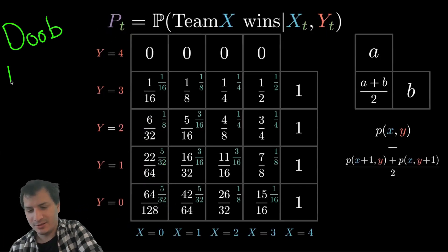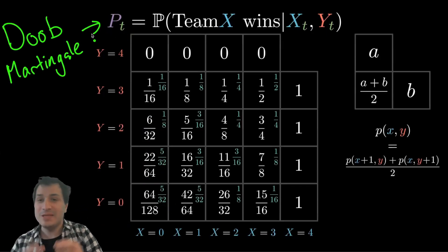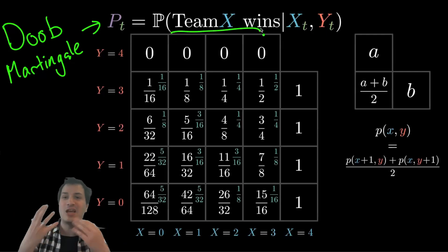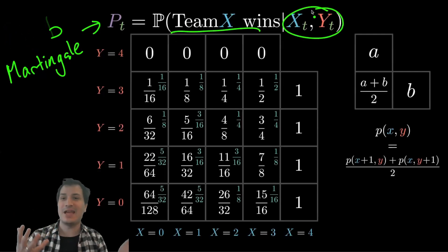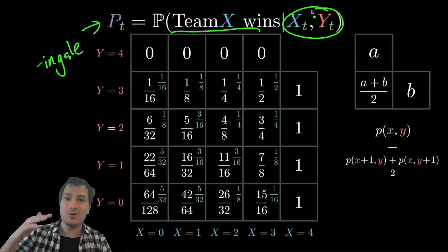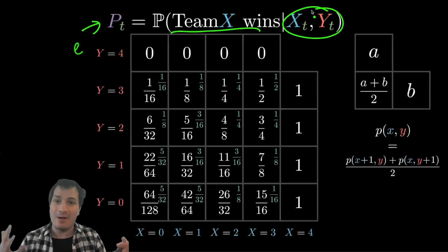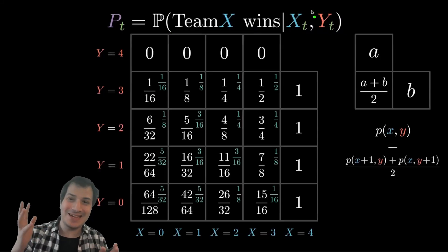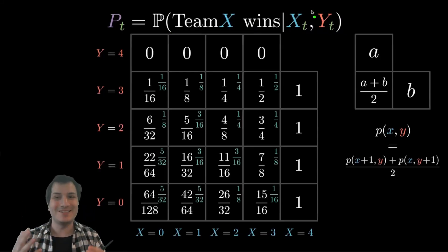So this thing is called the Doob martingale. And the function pt, if you define it this way, the expected value or the probability of some event given information up to time t, it's always a martingale. So it goes up or down by the same amount on average. And that is what lets this bet size thing work. And if you like this kind of thing, I have a few other videos on martingales that you should check out. You can use them to calculate all sorts of things, and they come up all the time in these slick probability proofs.